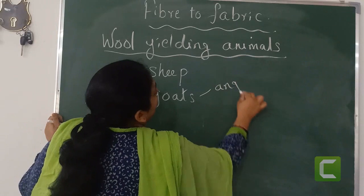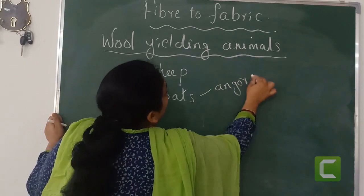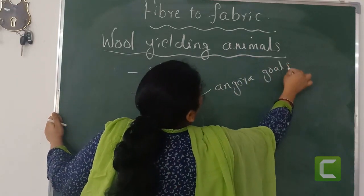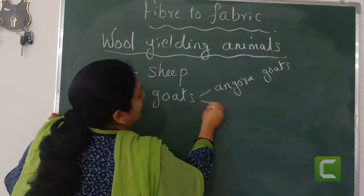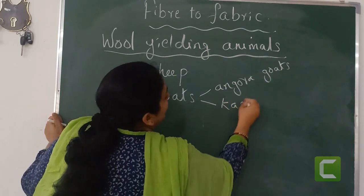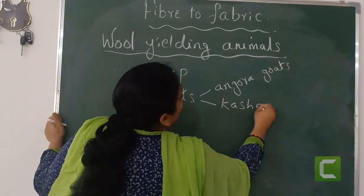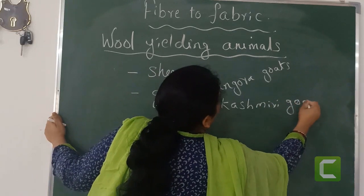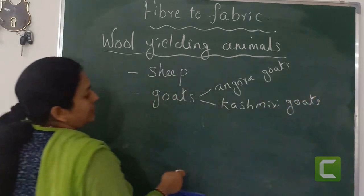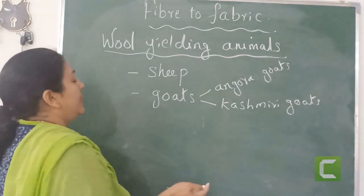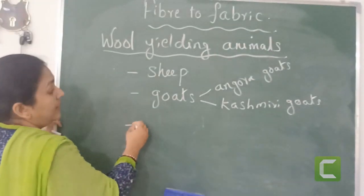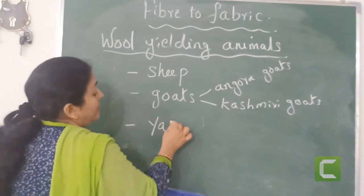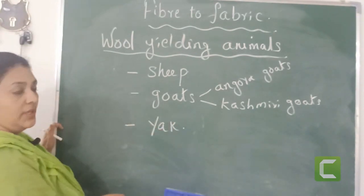Angora goats are there. Kashmiri goats are there. Then yak — yak is another animal which gives us wool.